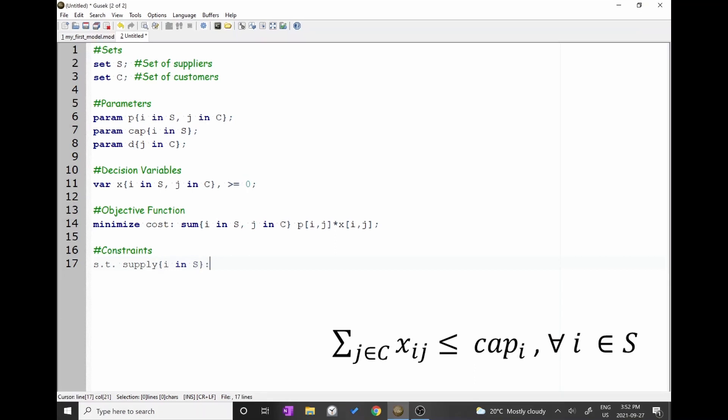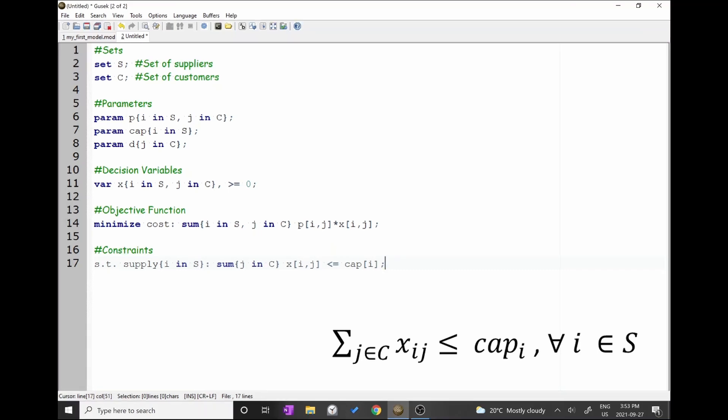In this part of the code, we need to add the equation. In this case, it is the sum of j in set c of x i j less than or equal cap. After the colon, write sum keys j in c, followed by x brackets i j less than or equal cap brackets i semicolon.